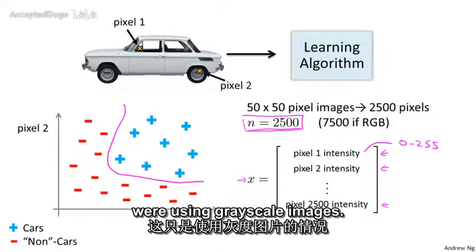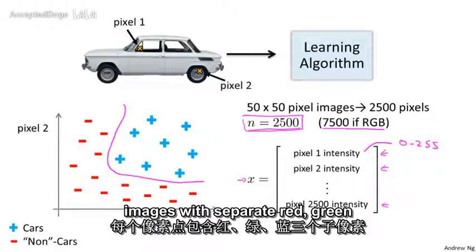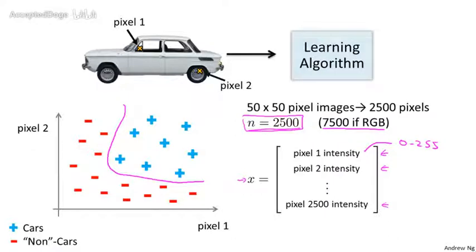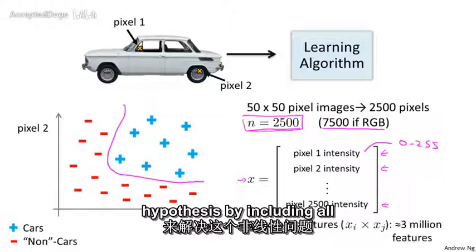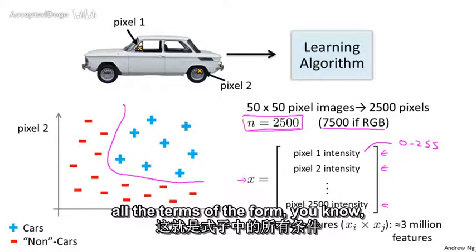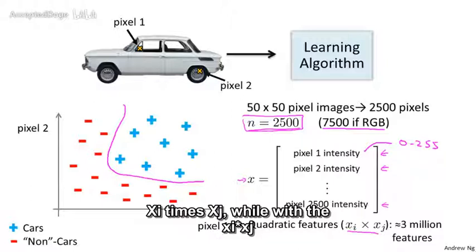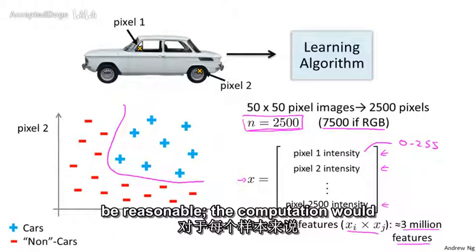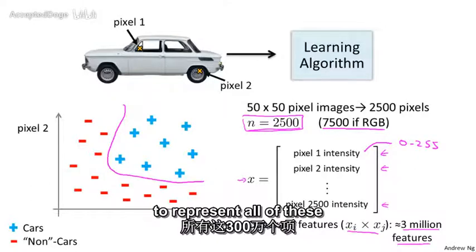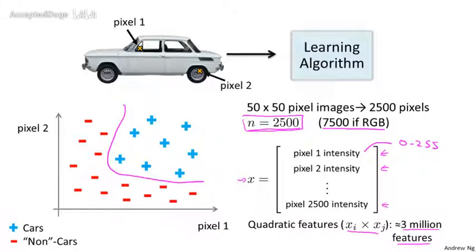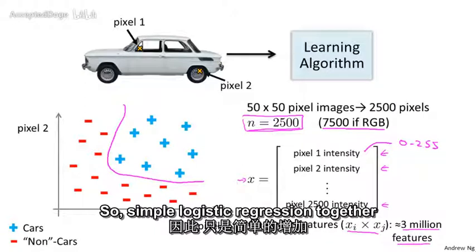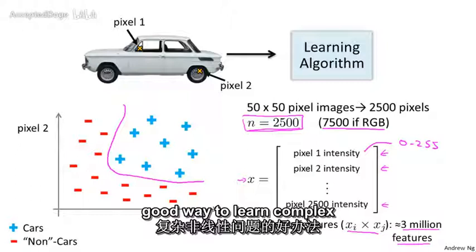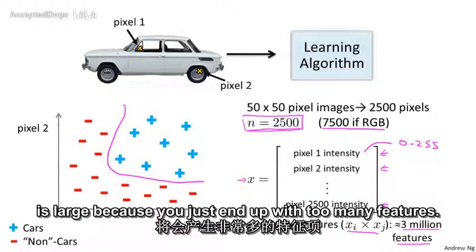And that's if we were using grayscale images. If we were using RGB images with separate red, green, and blue values, we'd have n equals 7,500. So if we were to try to learn a non-linear hypothesis by including all the quadratic features, that is, all the terms of the form xi times xj, well with 2,500 pixels, we would end up with a total of 3 million features. And that's just too large to be reasonable. It would be computationally very expensive to find and to represent all of these 3 million features per training example. So simple logistic regression together with adding in maybe the quadratic or the cubic features, that's just not a good way to learn complex non-linear hypotheses when n is large, because you just end up with too many features.